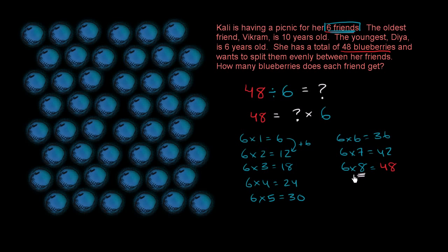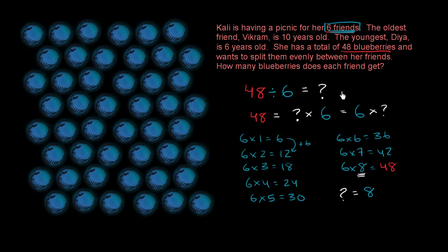Six times eight — and eight times six is the same thing. So this is going to be equal to six times question mark. And we now know that question mark is equal to eight. So each of her friends are going to get eight blueberries. 48 divided by six is equal to eight blueberries.